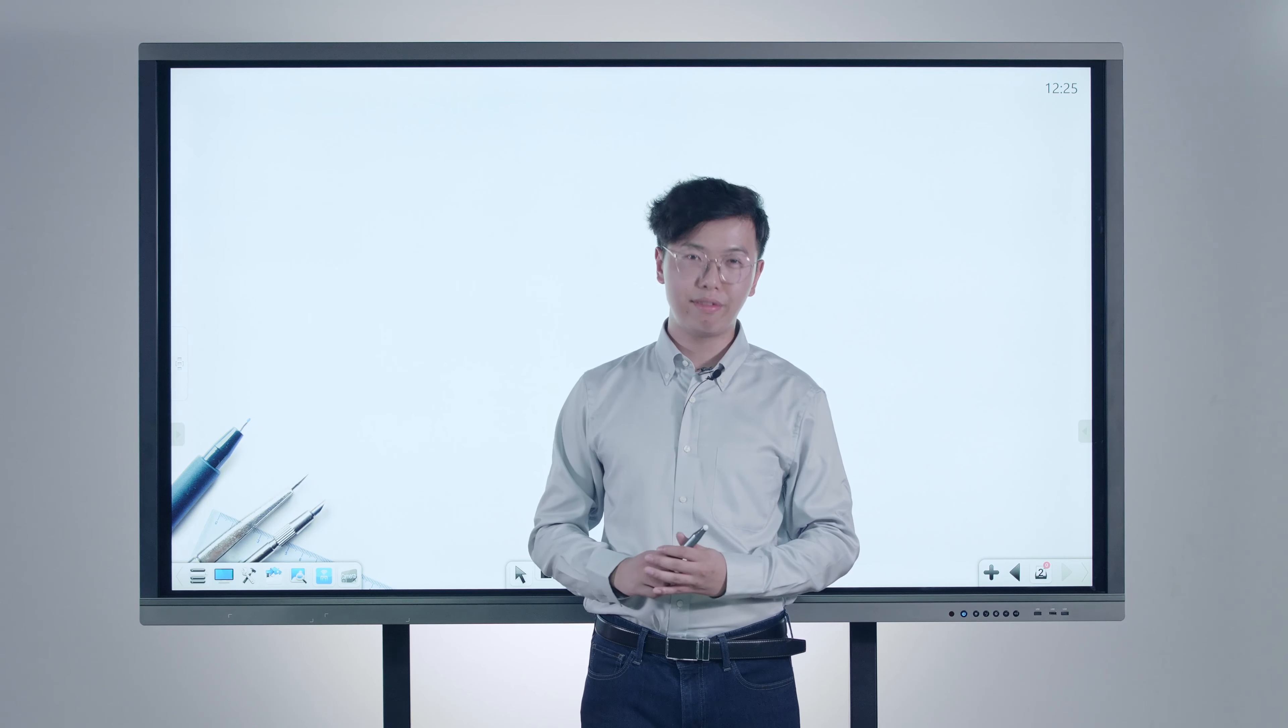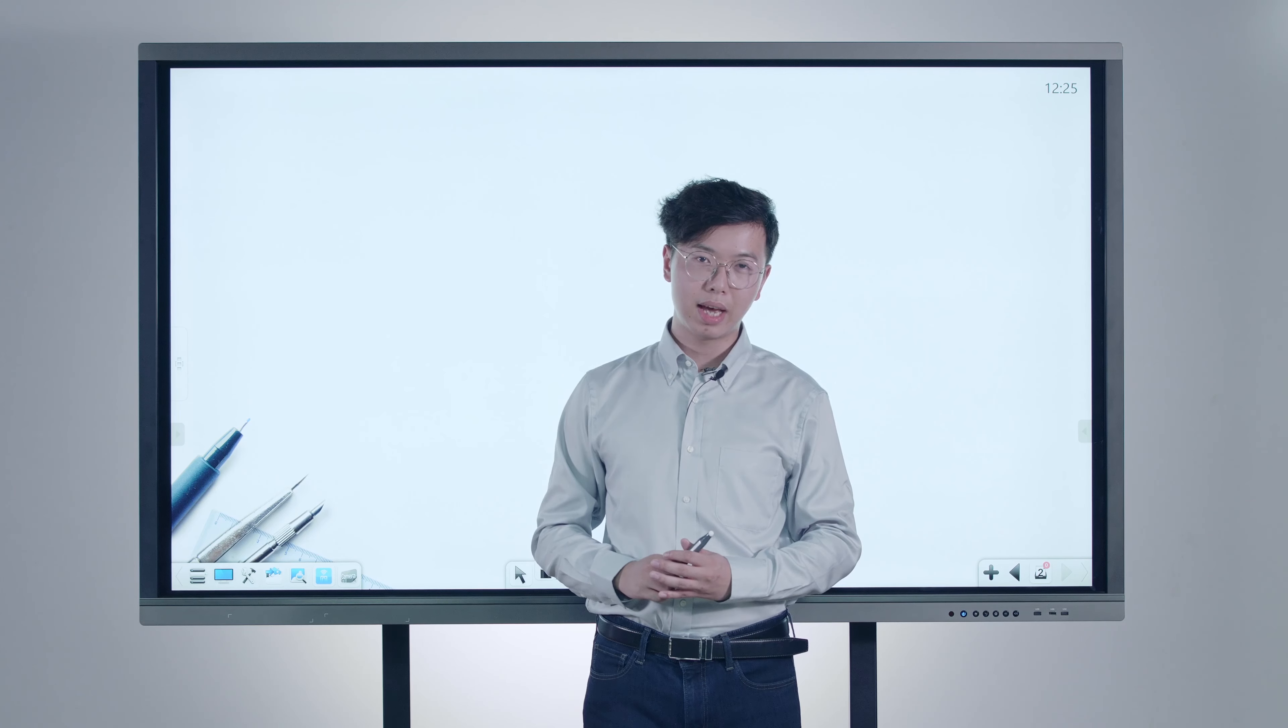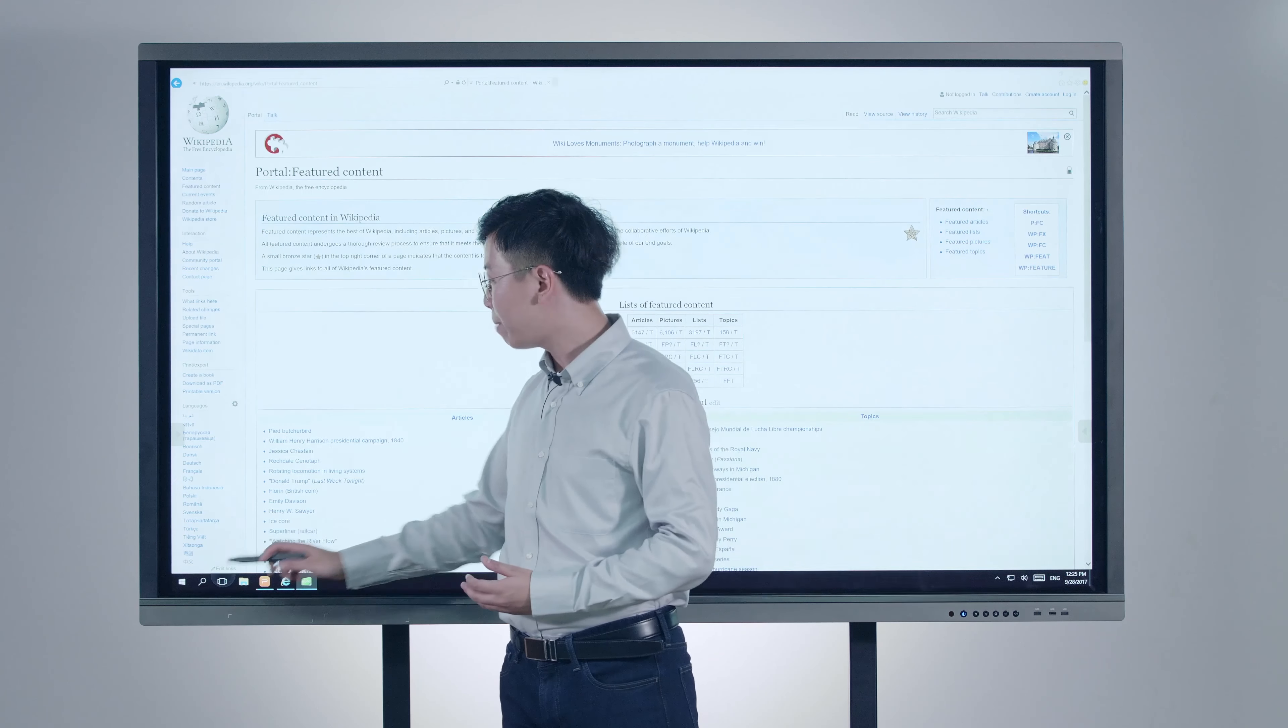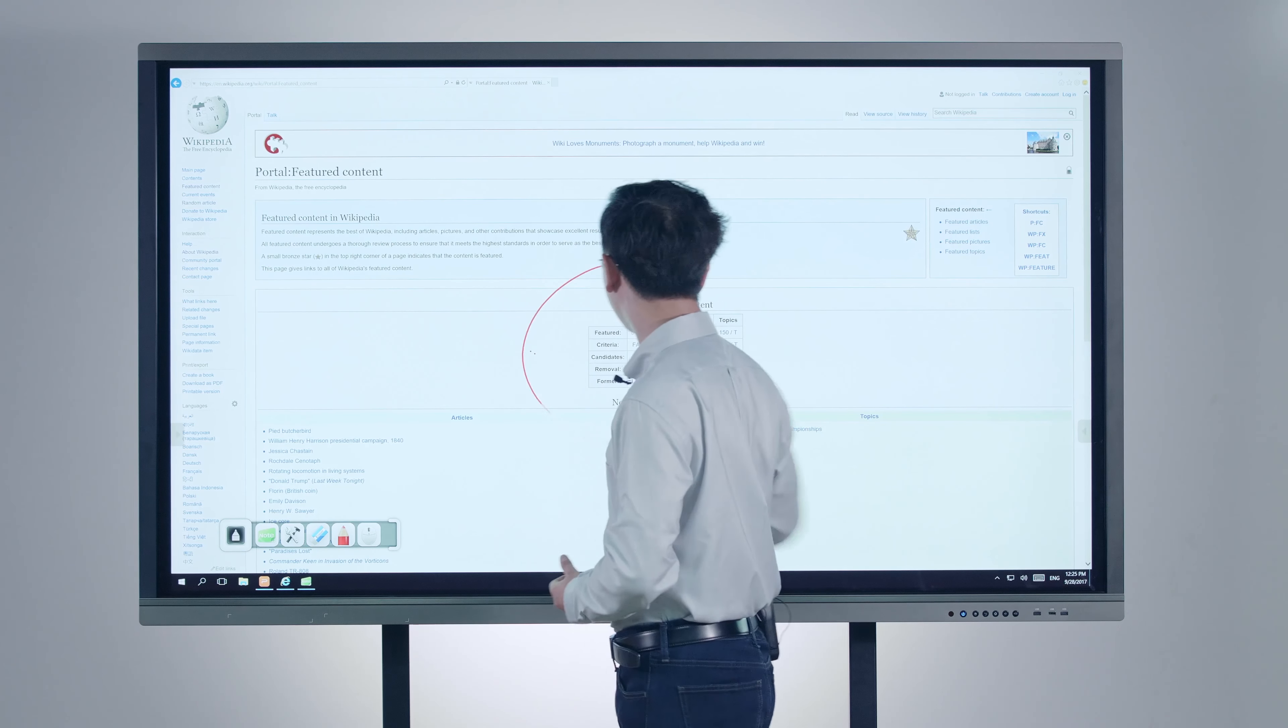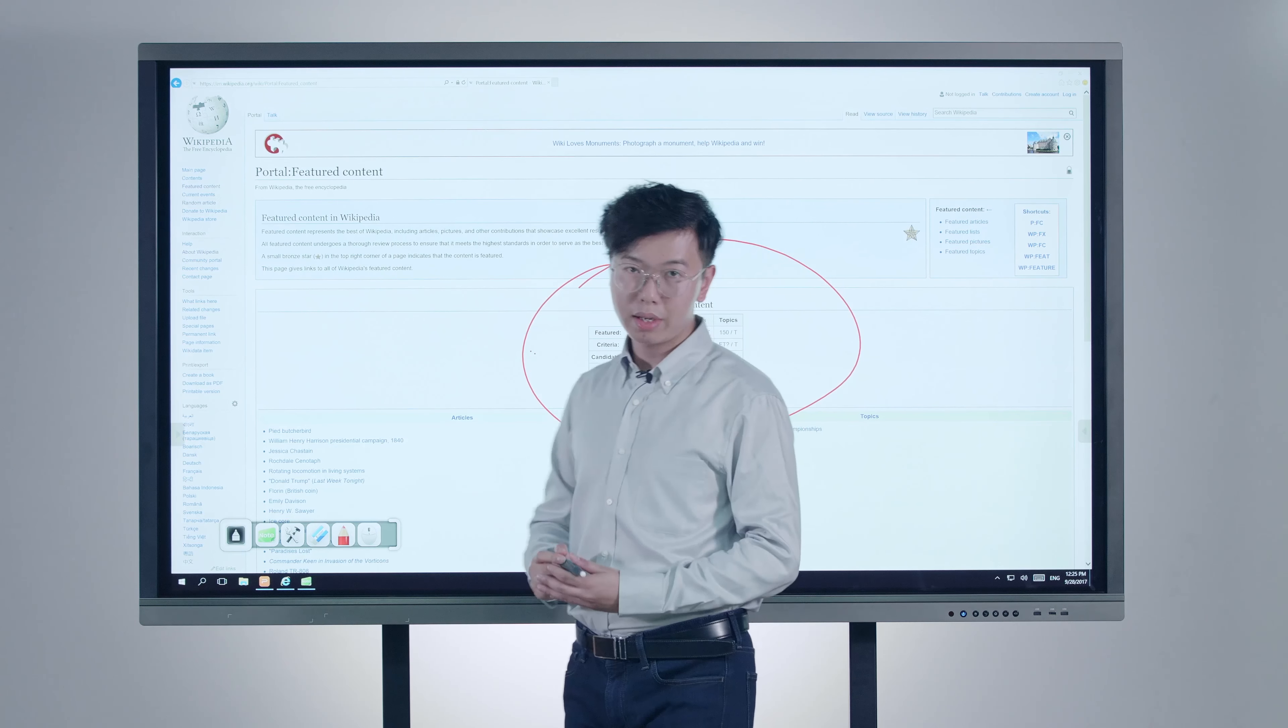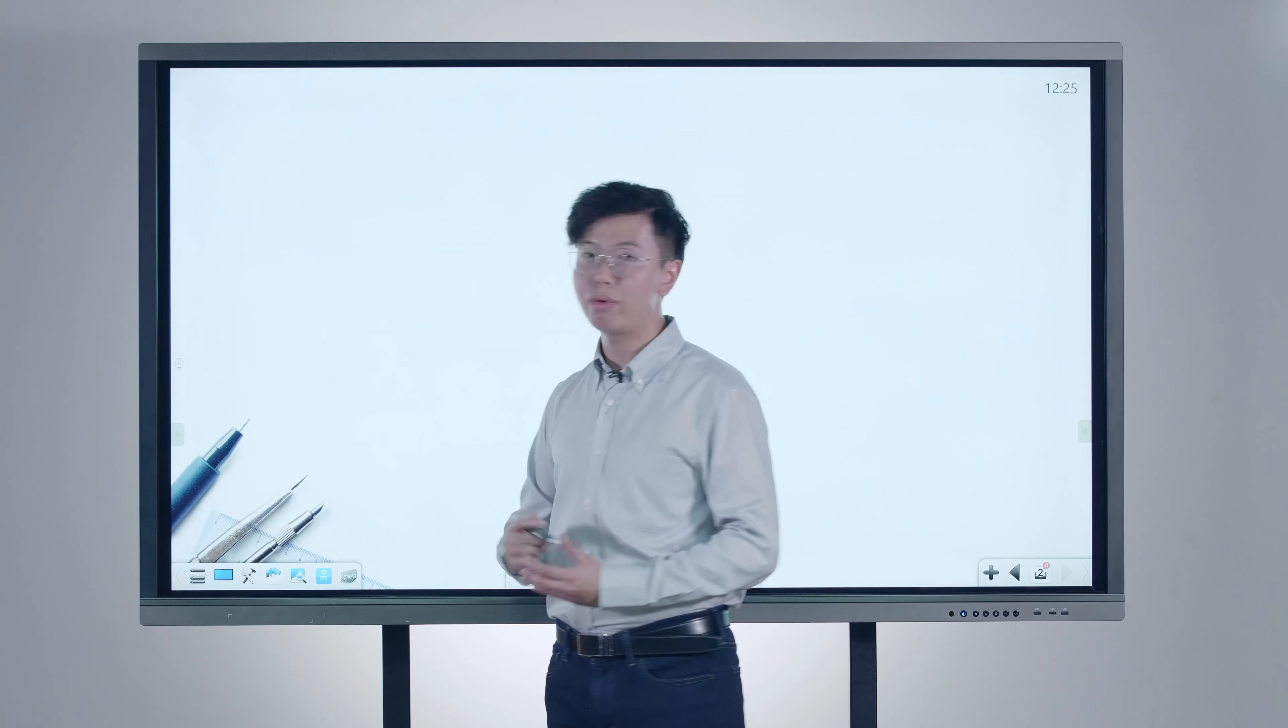Besides the basic input writing, you may also need to demonstrate PowerPoint slides, play videos, or view the Internet. In Node, you can one key to switch back to the desktop mode, where you can make annotations on third-party applications, and one key to switch back to Node whenever you want.